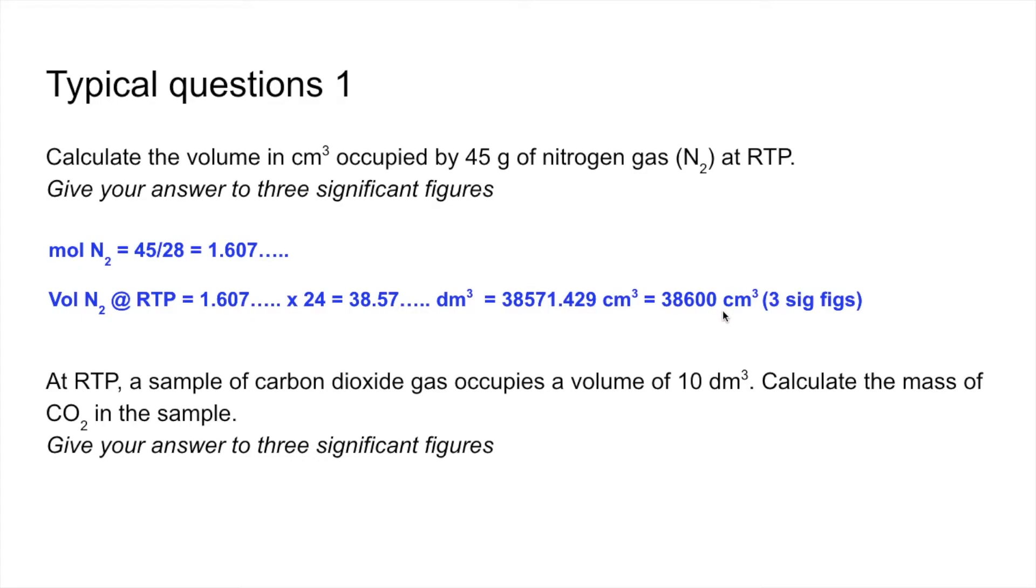Second question. First thing I'm going to do is work out how many moles of gas we've got from the volume. So the moles of CO₂ is 10 divided by 24. So that many moles there. I'm going to turn that into grams now by multiplying by the Mr. You can see the answer there at the end: 18.3 grams to three significant figures.